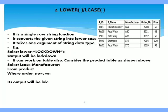The second function is LOWER or LCASE. It is a single row string function. It converts the given string into lower case. It also takes one argument of string data type. For example, suppose we write select lower LOCKDOWN, and it is written in capital letters. When this query is executed, its output will be lockdown in small letters. It works on tables similarly.